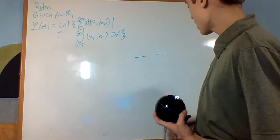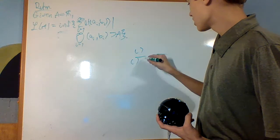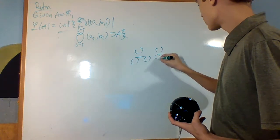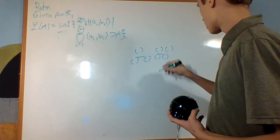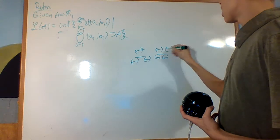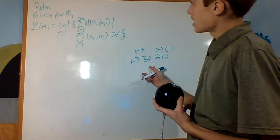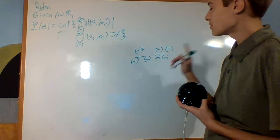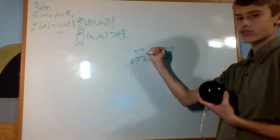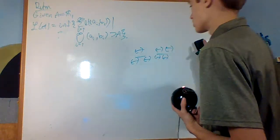So if this is my set A, I could have a covering that looks like this. If I sum up the lengths of all those intervals, that's going to be an overestimate of the Lebesgue measure. And what it does is it hones in on those overestimates until we get the correct amount.